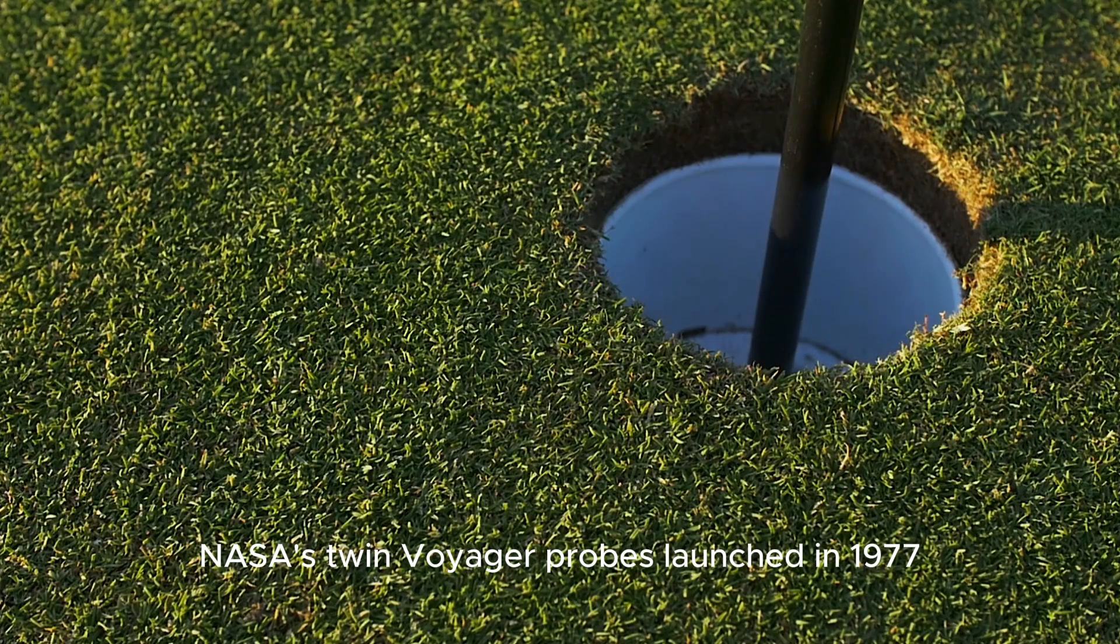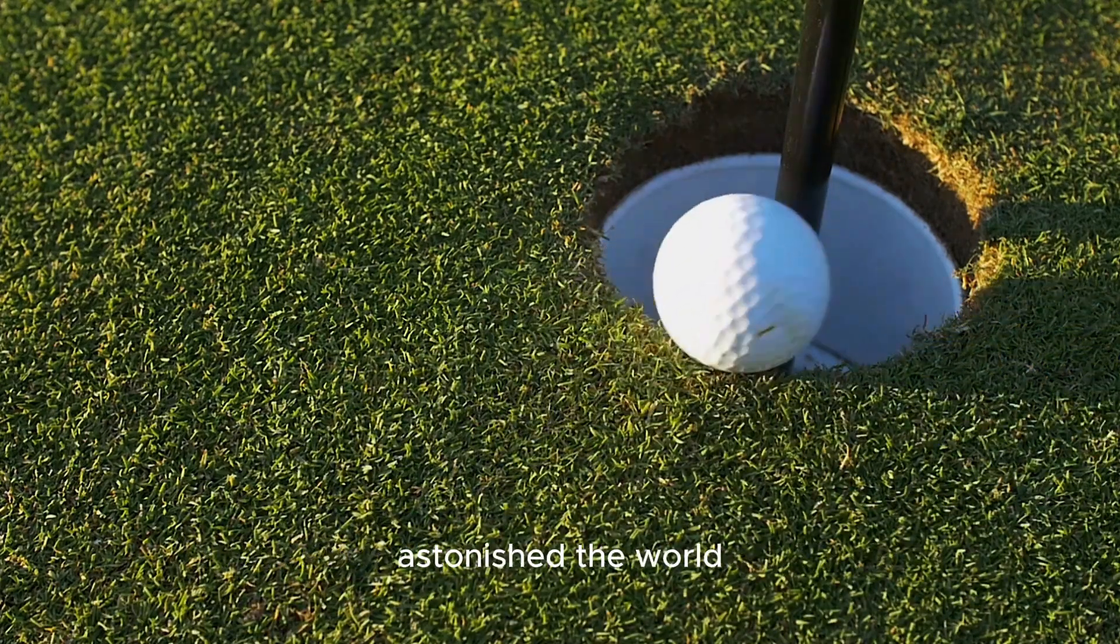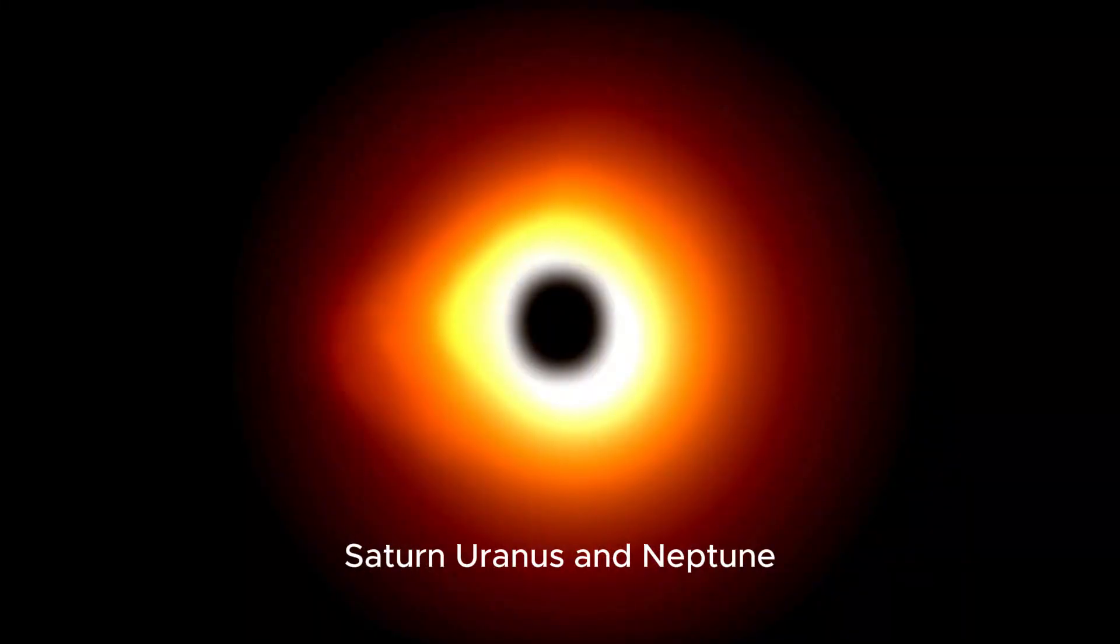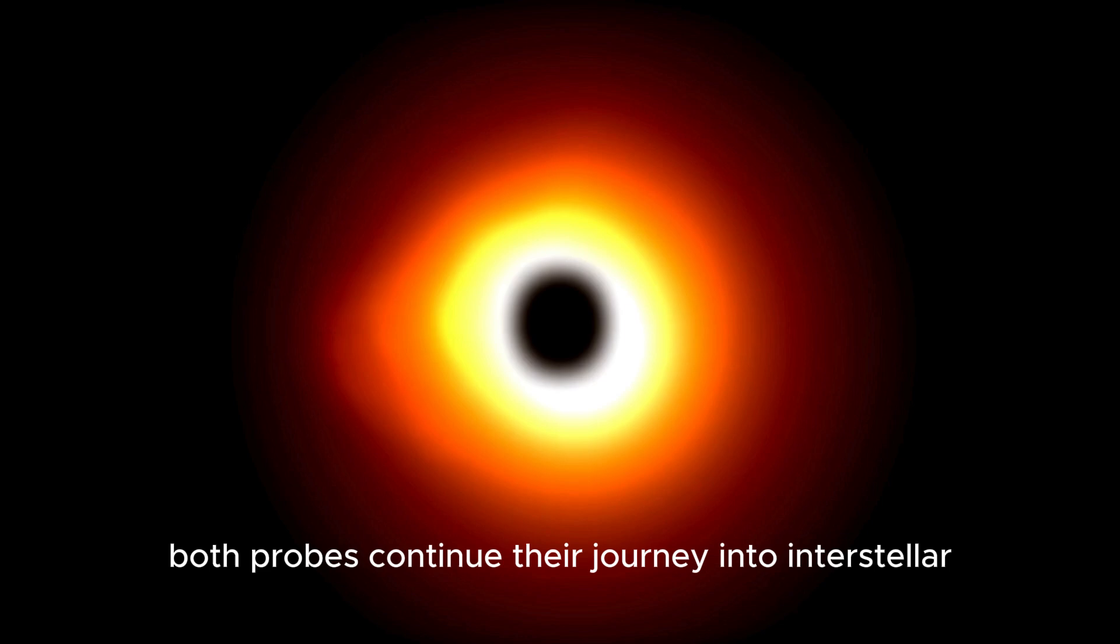NASA's twin Voyager probes, launched in 1977, astonished the world with their historic journeys to Jupiter, Saturn, Uranus, and Neptune. Even after 45 years, both probes continue their journey into interstellar space.